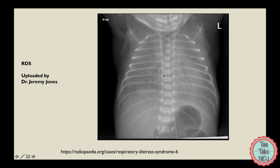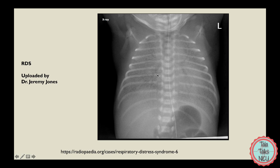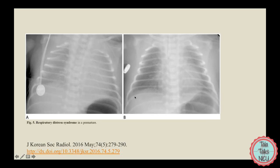The other big clue that tells us this is RDS is the presence of air bronchograms. Air bronchograms are where you see the air-filled bronchi prominently against the white collapsed lung — you can basically trace the bronchial tree throughout the x-ray. Air bronchograms are pretty much pathognomonic of RDS.